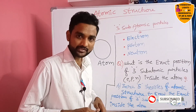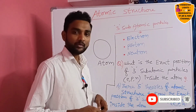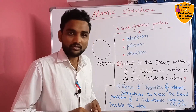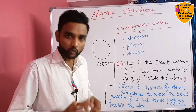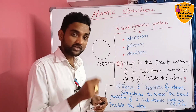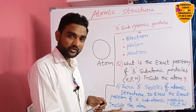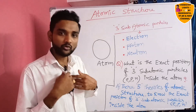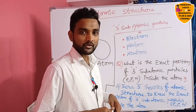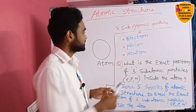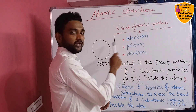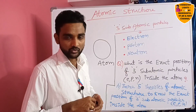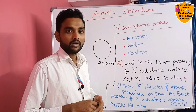Now the problem is: what is the exact position of the electron, proton, and neutron inside the atom? For example, if a person is in a room, we need to know their exact position — whether in the middle, a corner, or which side. Similarly, we have to know the position of each subatomic particle inside the atom. To overcome this problem, scientists developed five theories.